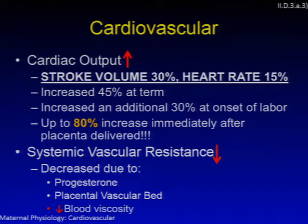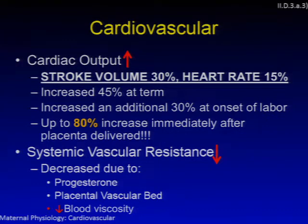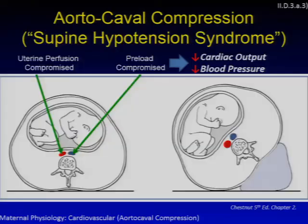This is partially due to the autotransfusion that occurs with uterine involution. Systemic vascular resistance also decreases, primarily due to an effect of progesterone, but also due to the low-resistance placental vascular bed and the fact that pregnancy reduces blood viscosity, as we'll discuss in a future slide.